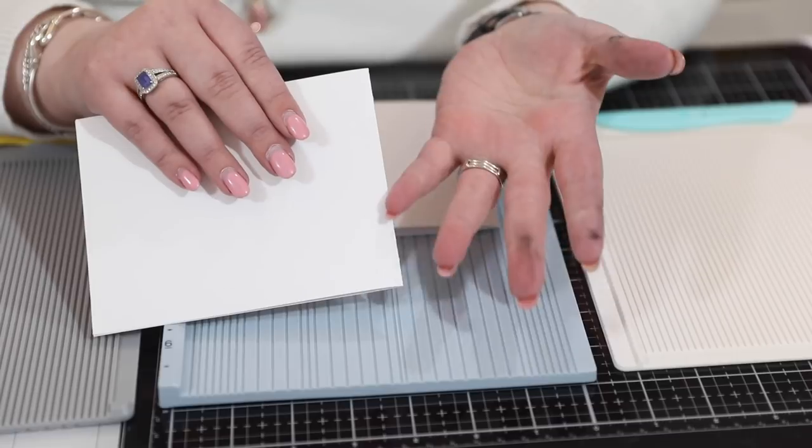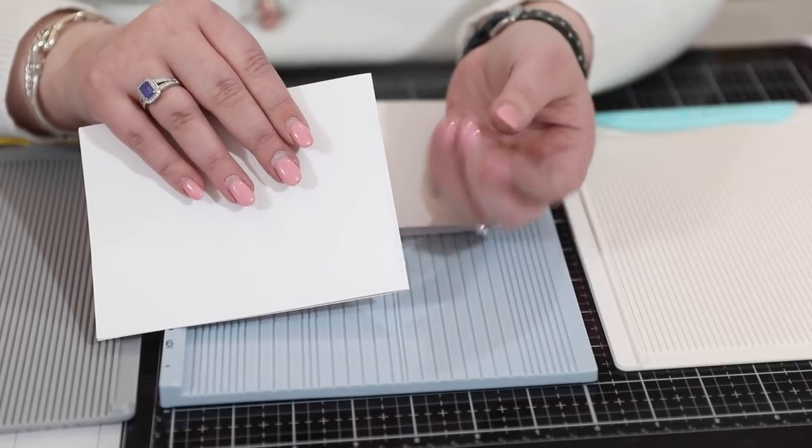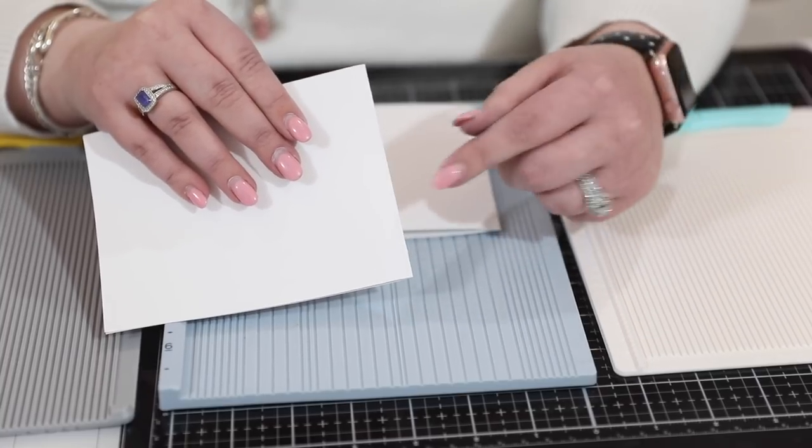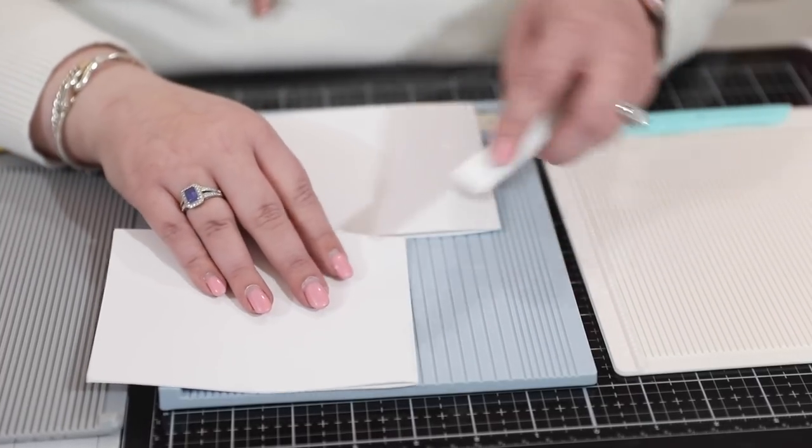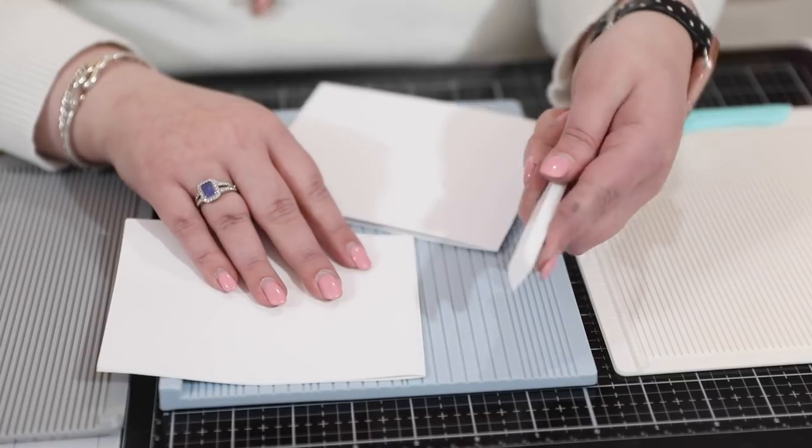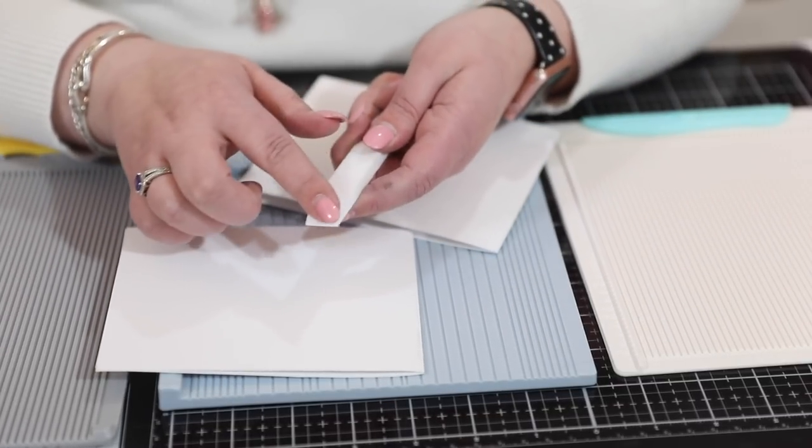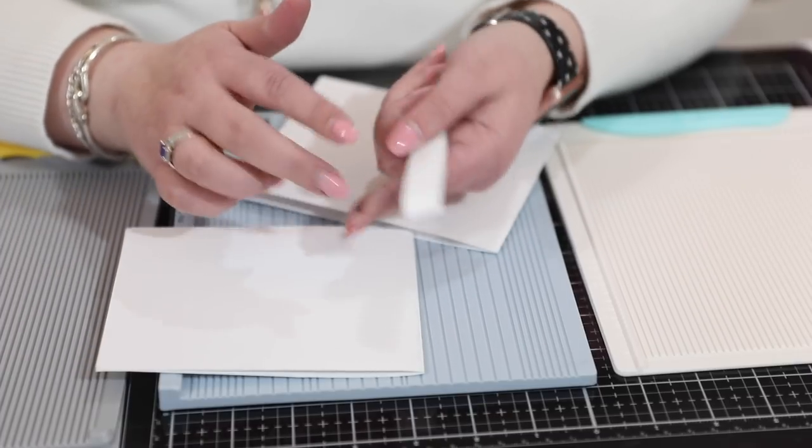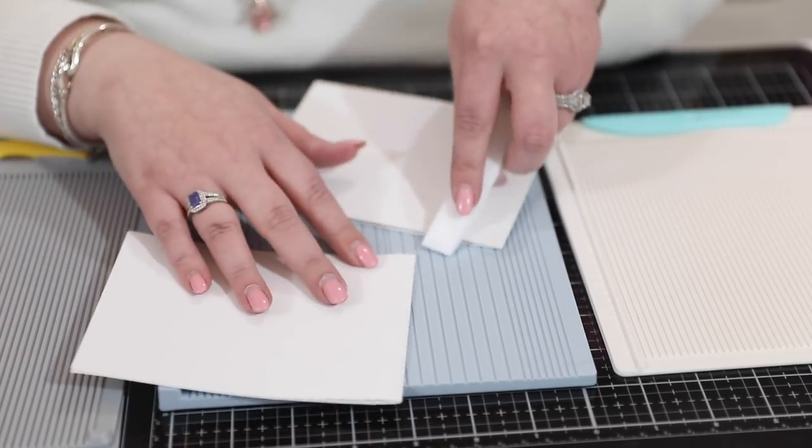First of all, I have inky hands. Who doesn't end up with inky hands when they're crafting? You end up using your inky fingers because you end up scoring. I always, even when I use my scoreboard, end up firming it up with my bone folder. I am a recent convert to the Teflon bone folder because it avoids some of that inkiness, and I really like this curved surface. It gives me a really nice fold.